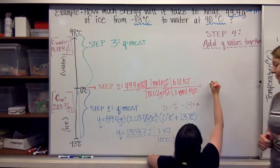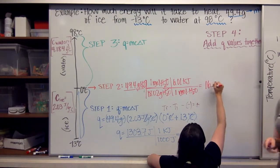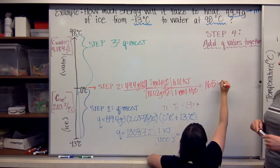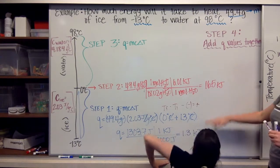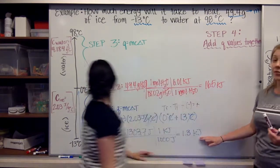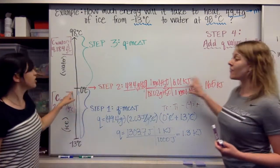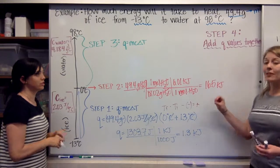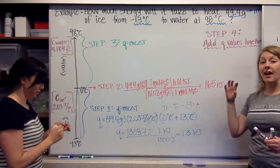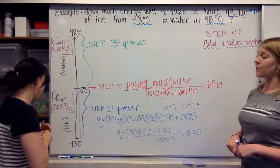Moles and grams cancel, and we're left with 16.5 kilojoules — a lot more than the 1.3 kilojoules from step one. This is a lot of energy that it takes just to melt the ice at that phase change.